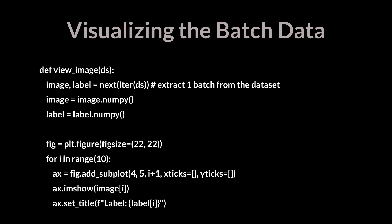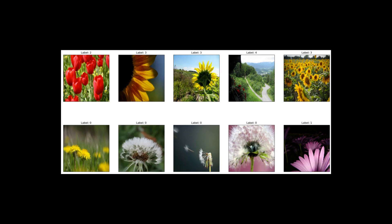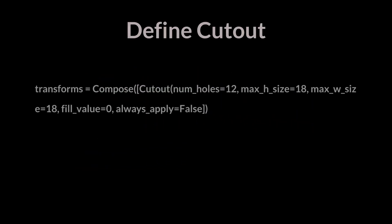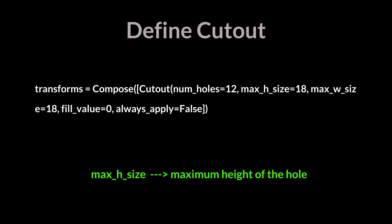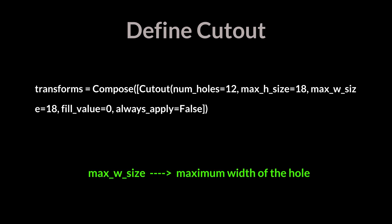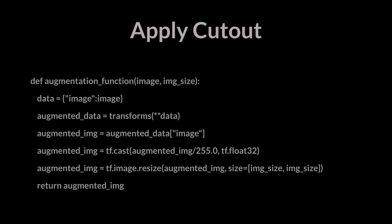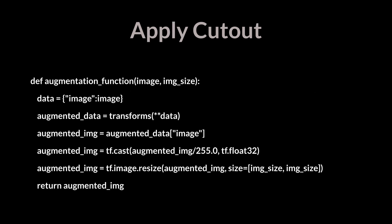Now let's visualize the batch data. We define a simple function to visualize pairs of images and labels from the dataset. Next, it's time to define the cutout transformations to be applied to the original image data. The number of holes denotes the number of regions to zero out. The max_h_size denotes the maximum height of the hole, the max_w_size denotes the maximum width of the hole, and the fill value denotes the value for dropped pixels.